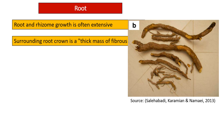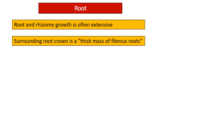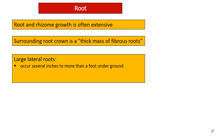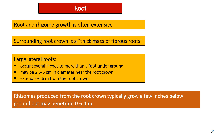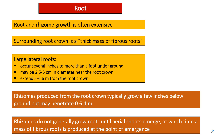Root and rhizome growth is often extensive. Surrounding the root crown is a thick mass of fibrous roots. Large lateral roots occur several inches to more than a foot underground. They may be 2.5 to 5 cm in diameter near the root crown, and may extend 3 to 4.6 meters from the root crown. Rhizomes produced from the root crown typically grow a few inches below ground but may penetrate 0.6 to 1 meter deep. Rhizomes do not generally grow roots until aerial shoots emerge.